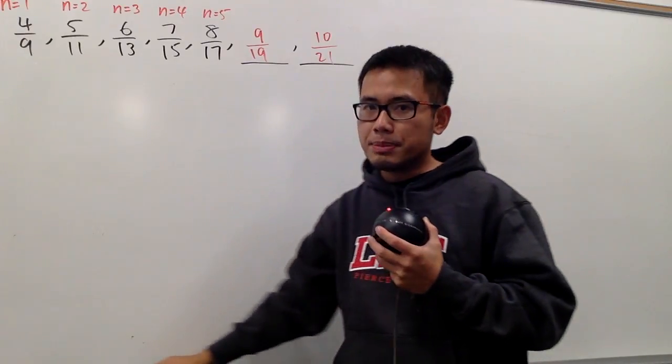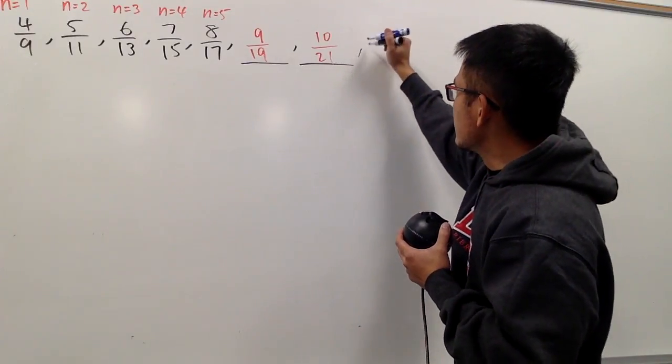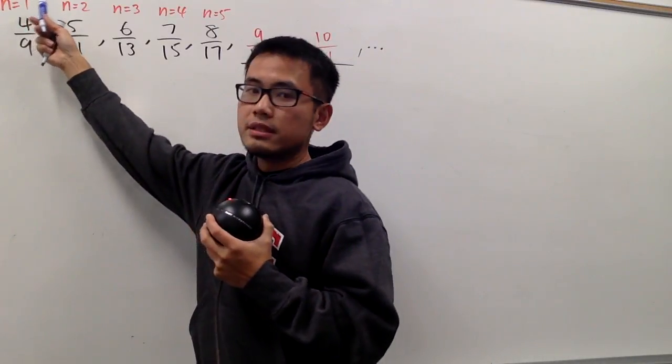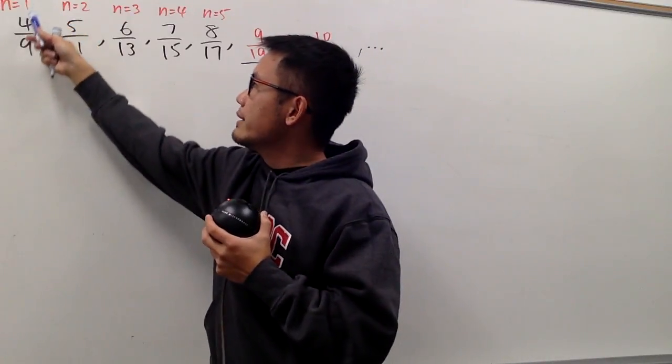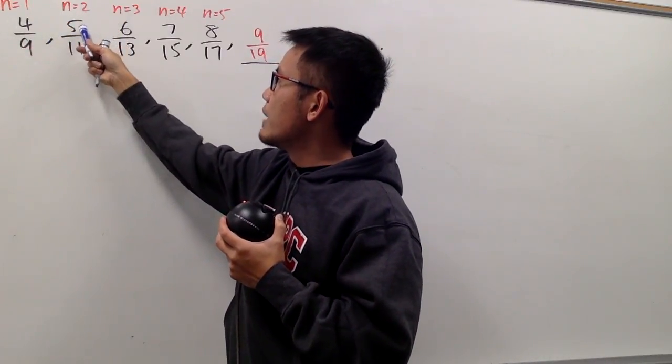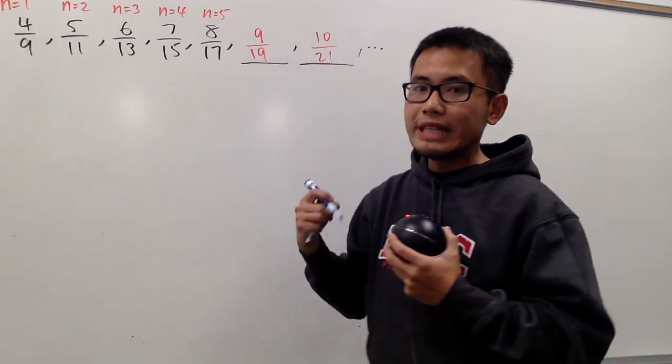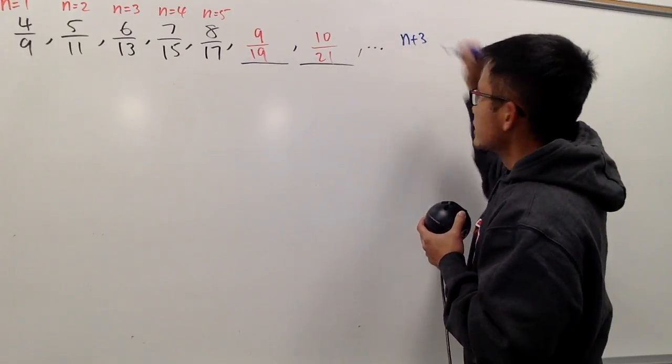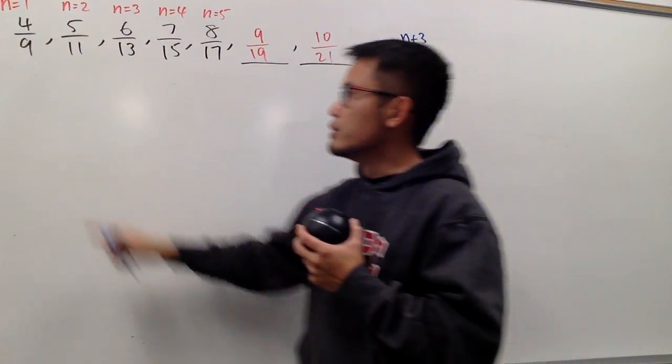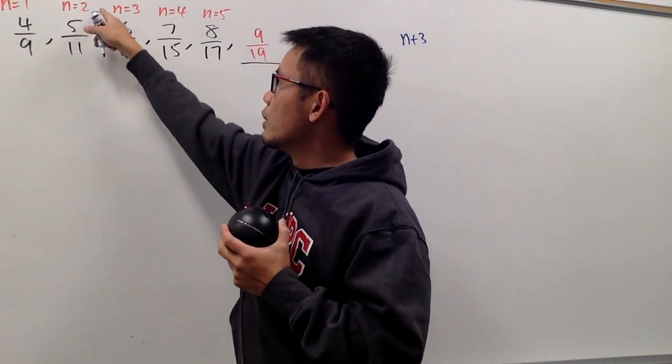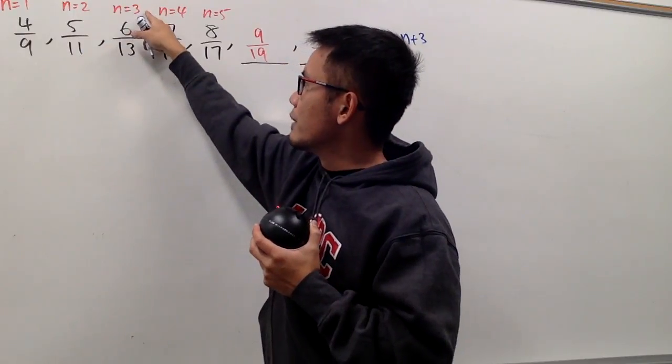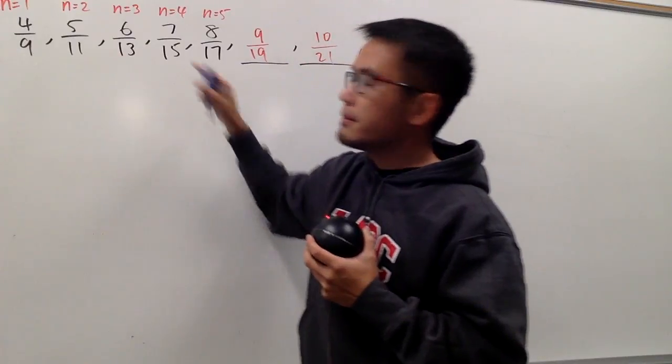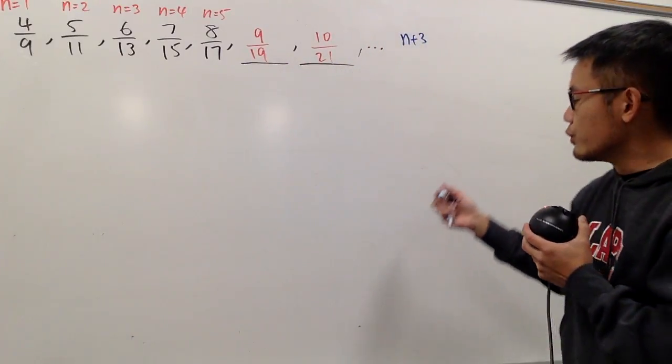And to come up with the explicit formula, it's not bad at all. So you can just say, well, as a convention, n is starting at 1. So from 1 to 4, from 2 to 5, 3 to 6, you can just add 3 to the n values. So the nth term is going to be n plus 3 on the top.